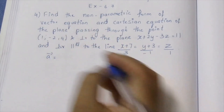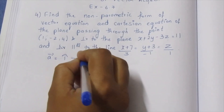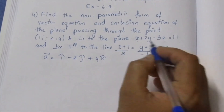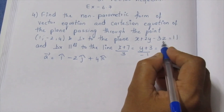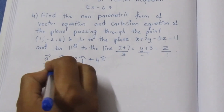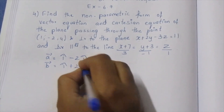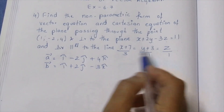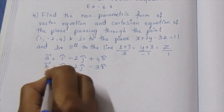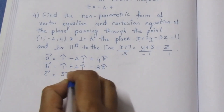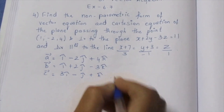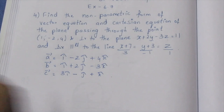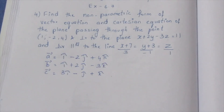Vector A is i-cap plus 4k-cap. This gives us i-cap, j-cap, k-cap components. We set up vectors: i-cap plus 2j-cap, and i-cap plus 2j-cap plus 3k-cap. Now we have 3 vectors to work with.